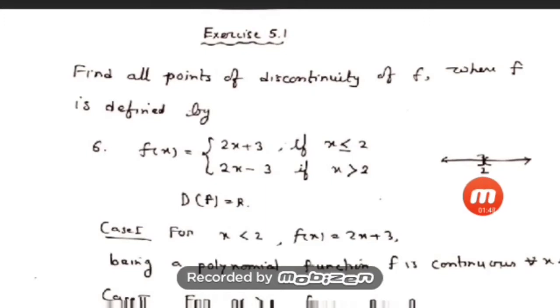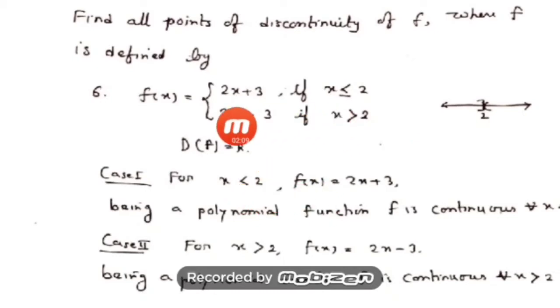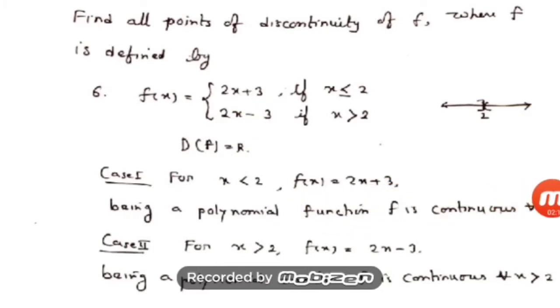For Case 1, I have considered x less than 2, which in interval notation is minus infinity to 2. The function is defined by 2x + 3. When considering an interval case, you can give the conclusion just by using the result — that is, using results obtained earlier — without taking any specific point c and showing detailed calculation.